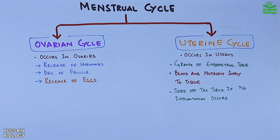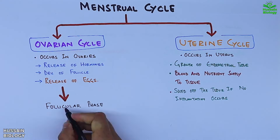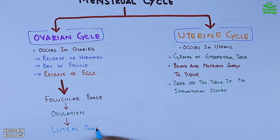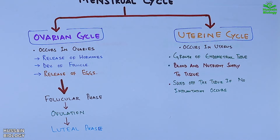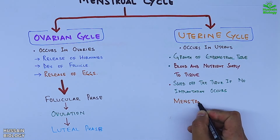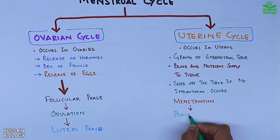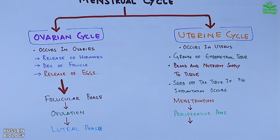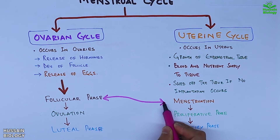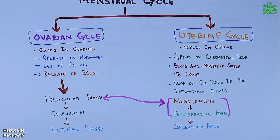The ovarian cycle has three phases: follicular phase, ovulation, and luteal phase. The uterine cycle also has three phases: menstruation (also known as periods), followed by the proliferative phase, and then the secretory phase. When the follicular phase is occurring in the ovaries, menstruation and the proliferative phase are going on in the uterus. Similarly, when the luteal phase is driven in the ovaries, the secretory phase is occurring in the uterus.